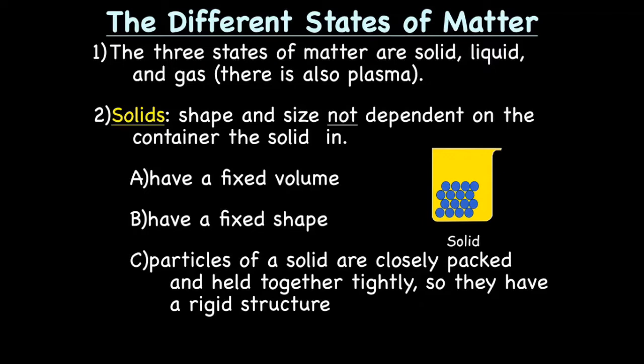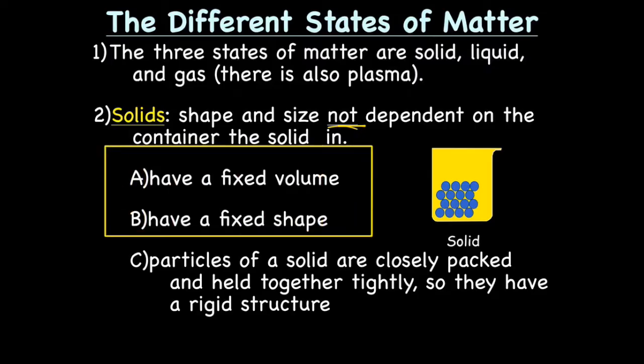Solids: shape and size are not dependent on the container the solid is in, which means that solids have both a fixed shape and a fixed volume. If I were to take a solid — let's say an ice cube — and put it in a cup, it's still the ice cube's shape and size. I take it out of the cup, lay it on the table, it's still ice cube's shape and size. So the shape and volume are not dependent on the container the solid is in.